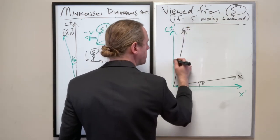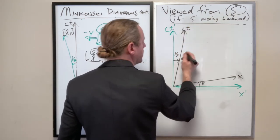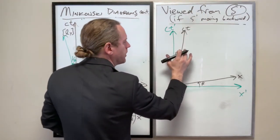This becomes the ct-axis shifted by, we'll say 1 over beta is the slope or beta is the angle. I should probably just draw this beta there. Yeah.